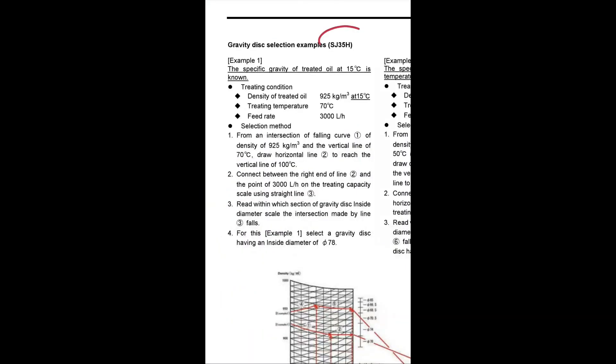We are going to take the SJ35H purifier model for plotting the nomogram now. Taking Case 1: we know the specific gravity of the treated oil at 15 degree centigrade. We get this 15°C specific gravity either from the bunker delivery note during bunkering, or from the fuel oil analysis report after bunkering when we send a sample to the laboratory. So let's suppose we get 925 kg per meter cube at 15 degree centigrade. We are going to treat this oil at 70 degree centigrade keeping the feed rate at 3000 liters per hour. These are our treating conditions, and now we are going to plot the nomogram and select the appropriate gravity disk.